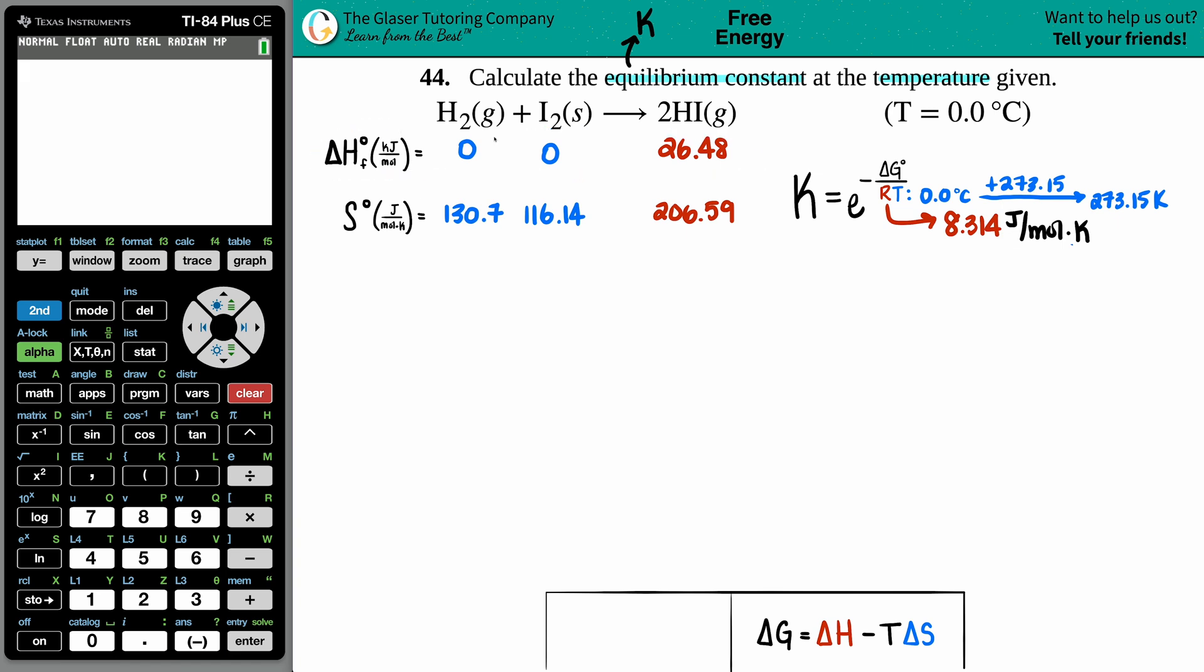It's the one written down here: delta G equals your enthalpy for the reaction minus your temperature times the entropy of the reaction. So if I'm solving for delta G and I have the temperature, well now I have to find delta H and delta S. That's why I went in the back of the textbook to get those delta H values and the S values.